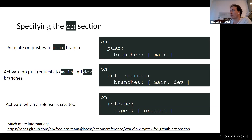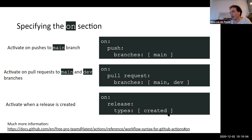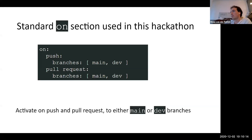You can also specify the branches on which you want to run, for example: activate on a push to the main branch, activate on a pull request to main or the dev branches, or for releases only when a new release is created. There's quite extensive documentation available online. In this hackathon, the most standard 'on' section activates on pushes and pull requests to the main and dev branches — that's what you'll see in most of the free examples we've included.